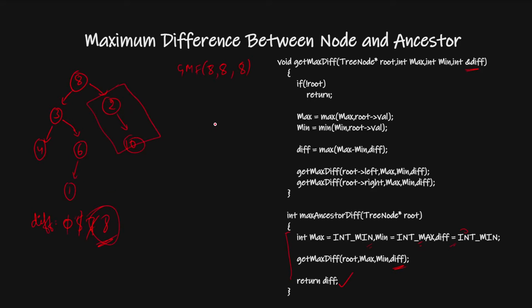Our time complexity will be O(N) because we simply visit each node once. The space complexity is also O(N) for the function call stack. I hope you understand this solution — it is very simple. If it helps you, do not forget to hit the like and subscribe button. Thanks for watching.